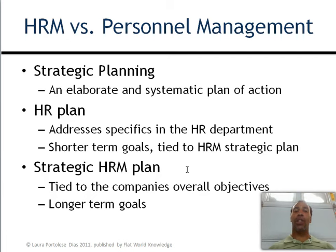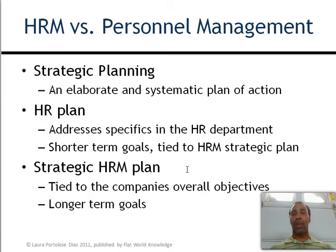The Human Resources Plan addresses specifics in the HR department and shorter-term goals — remember, shorter-term goals are typically called objectives, while long-term becomes a goal. These are tied to the Human Resource Management Strategic Plan. Everything that's done needs to be in alignment with the company's mission and goals. A Strategic HRM Plan is tied to the company's overall objectives and their longer-term goals, typically past one year.